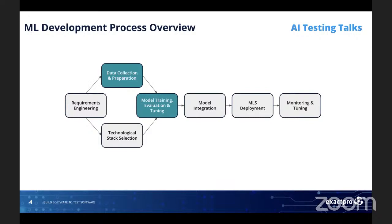Next, about the ML development process map. As you can see, there are a bunch of stages. Why is this important? We can consider it from two perspectives. First, an AI-based system is a set of components — some of them are models and algorithms, some are classic components, usual software code. For today, we are talking only about AI components, about models.